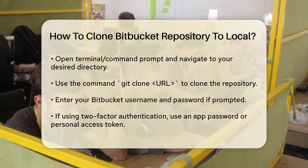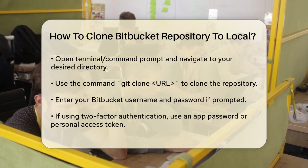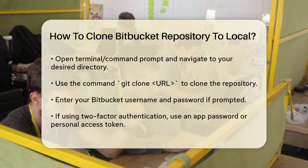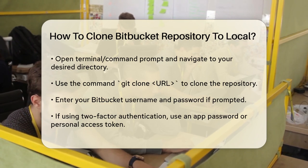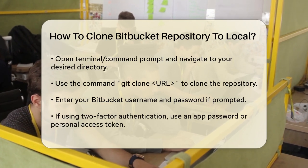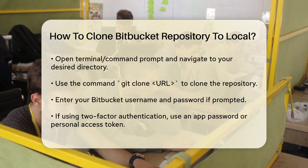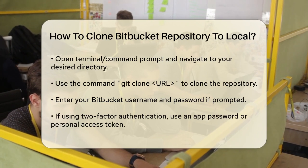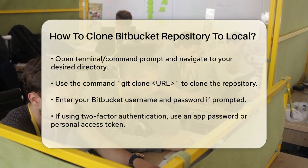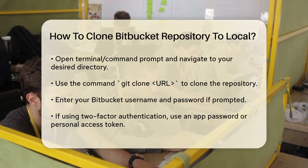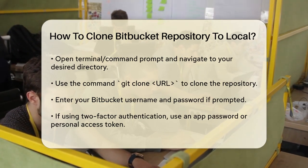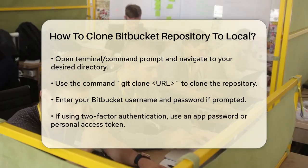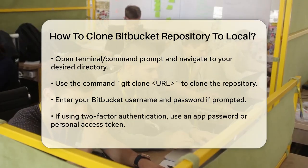Run the command git clone followed by the URL you copied. For example: git clone https://username@bitbucket.org/TeamSense/documentation-tests.git. If prompted, enter your Bitbucket username and password. If you have two-factor authentication enabled, you might need to use an app password or a personal access token.